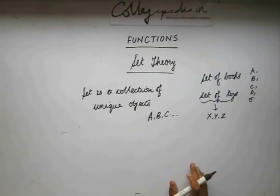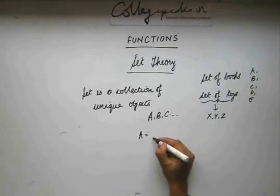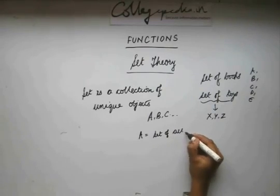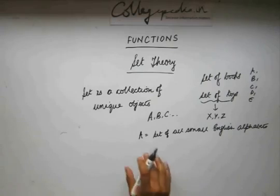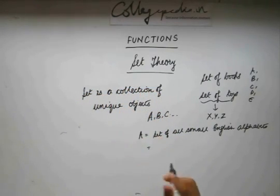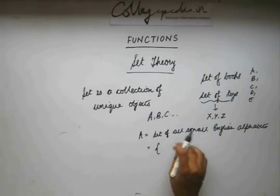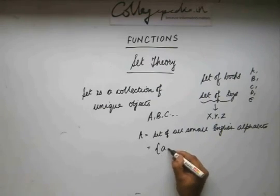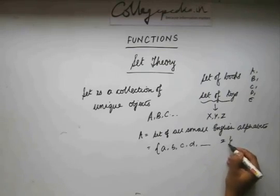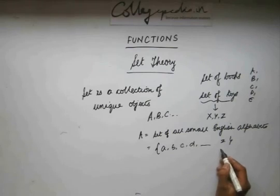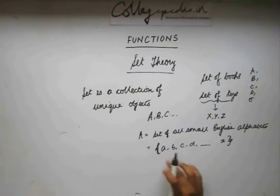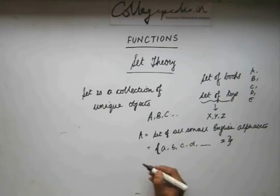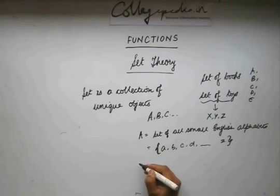This is the notation used for a set. For example, I have a set A which is the set of all small English alphabets. A set is a collection of unique objects, so set A has elements which are all small English alphabets — A, B, C, D... up to Z — enclosed in curly braces. The elements are generally denoted by a small letter. Another example of a set could be a set of all positive integers less than or equal to 10.